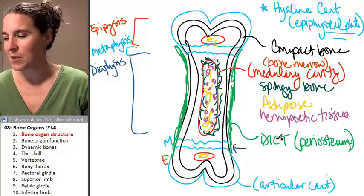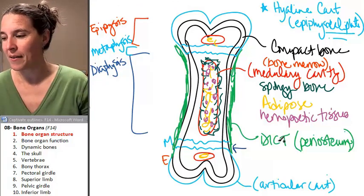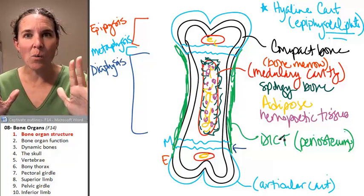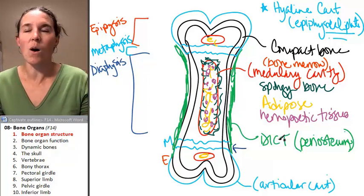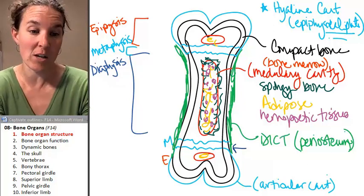I think that's everything that you need to know about the structure of a long bone. Now, we're going to look at what do they do? All these bones that we stick together in our skeleton, what is their function?